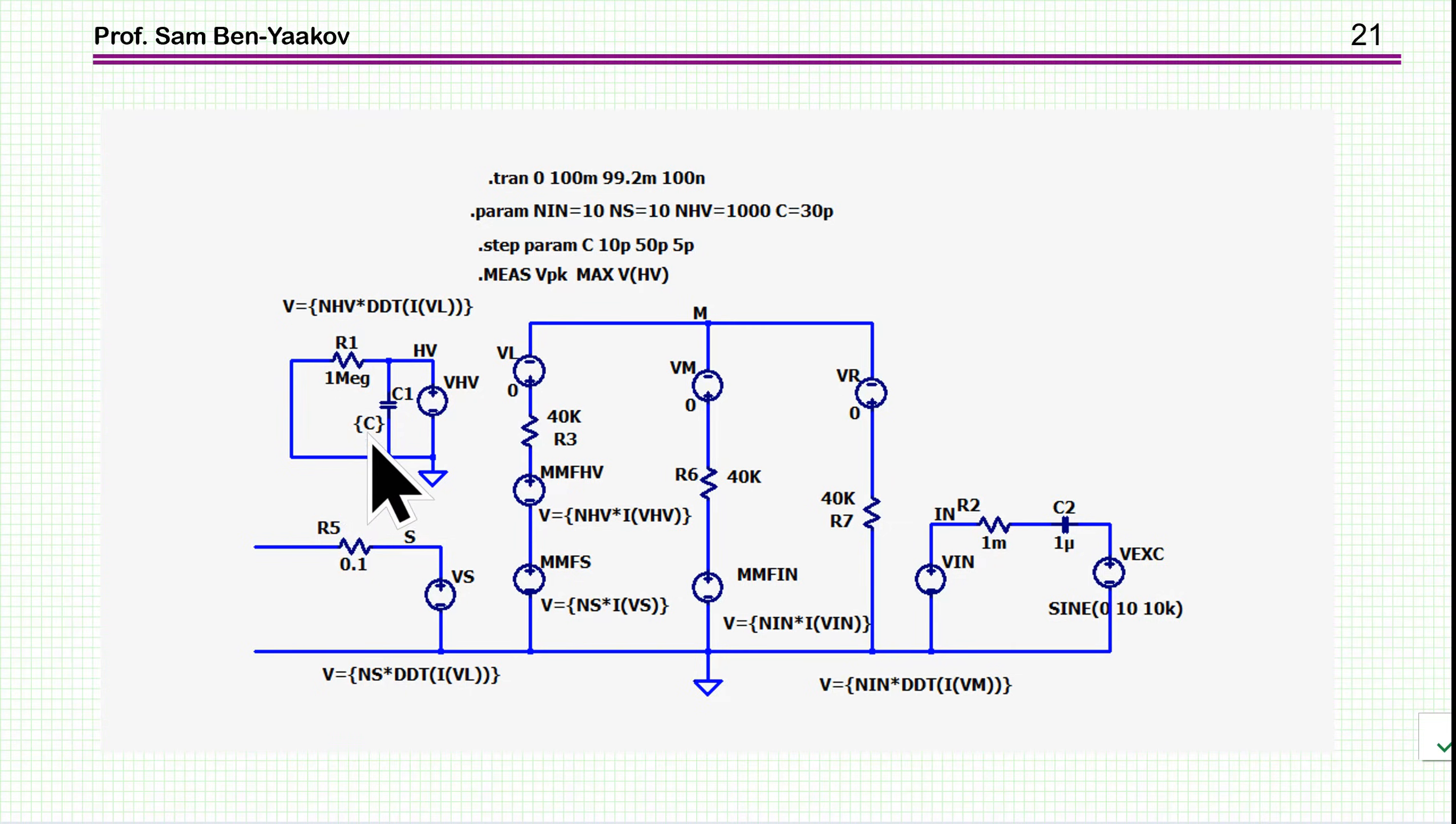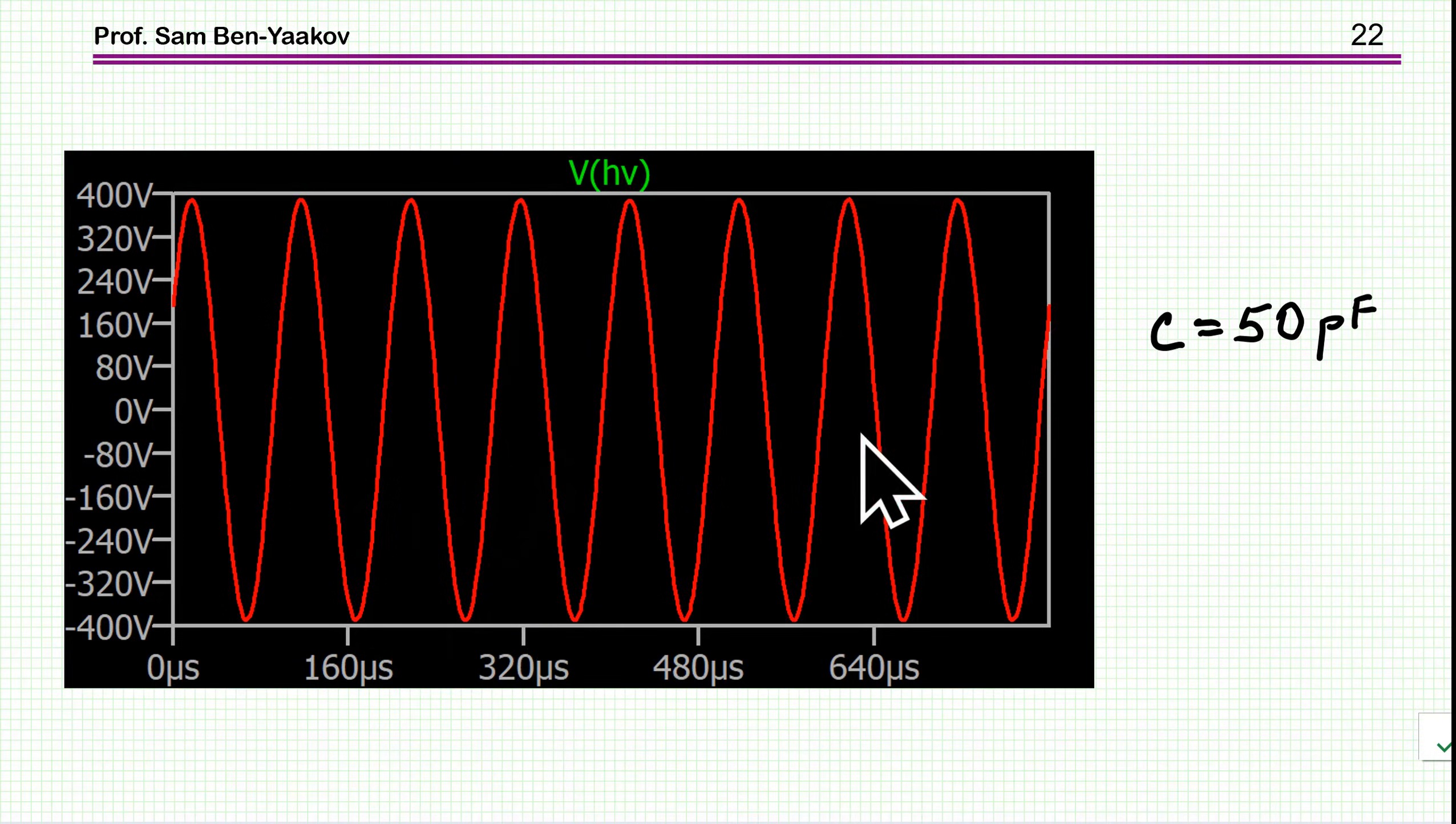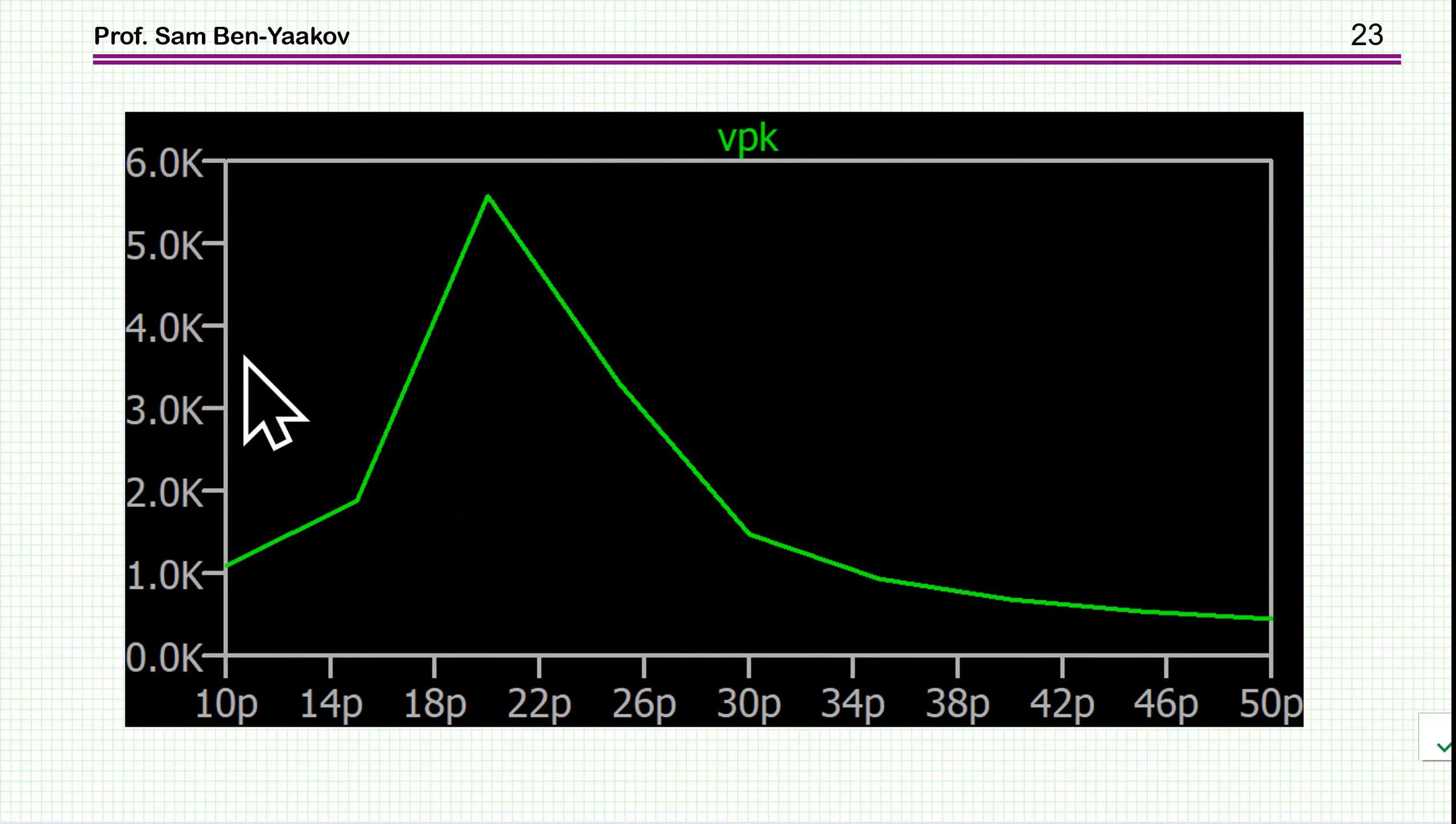Now, as it turns out, we can tune this circuit to the resonance between a capacitor here and the inductance of the circuit. And I'm going to sweep it between 10 picofarad and 250 picofarad with steps of 5 picofarad. First of all, I'm showing here the result for 50 picofarad. You see that in this case, we have, in fact, a little bit of an attenuation because of the loading. But if we look at the sweep, we see that around 20 picofarad, we have a resonance. We have a very, very high voltage.